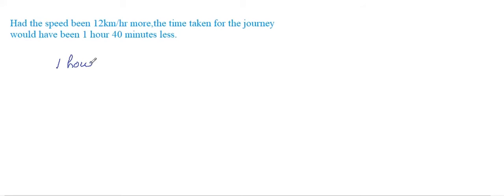Now we need to convert that 1 hour 40 minutes to hours. One minute equals 60 seconds and one hour equals 60 minutes. So we can write 40 minutes as 40 divided by 60 hours. We'll get 1 plus 2/3, which is 5/3 hours less.